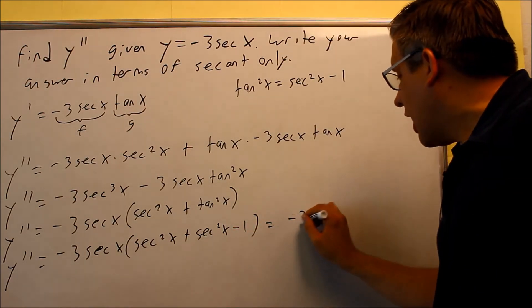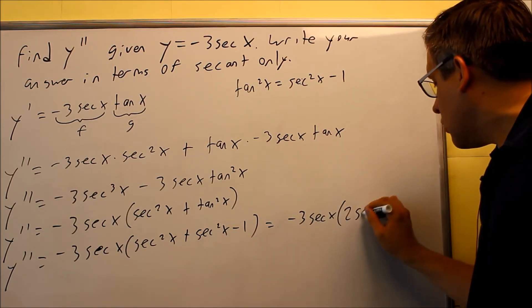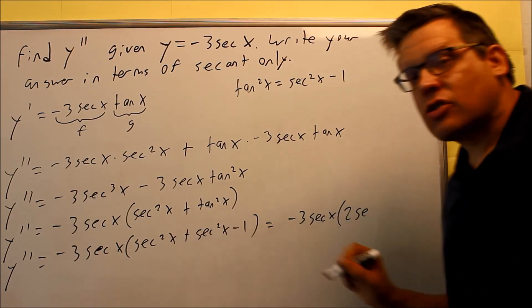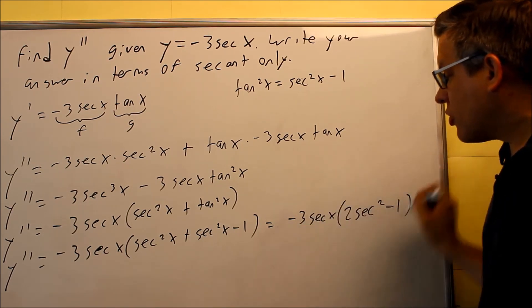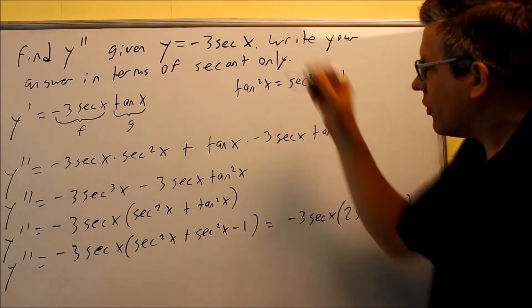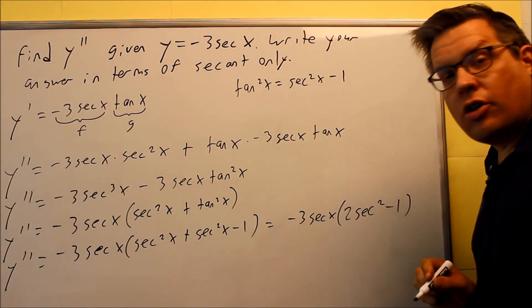The final answer that you're going to have is negative 3 secant x and then inside we can make that 2 secant squared x because there's like terms there and then minus 1. So this would be your second derivative and we see here that we have secants only in our answer.